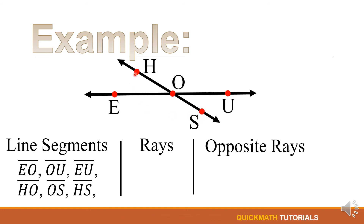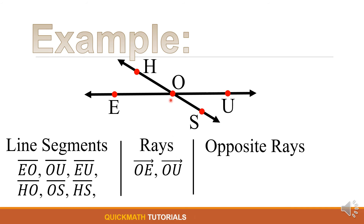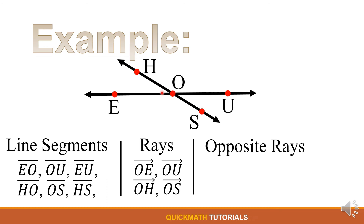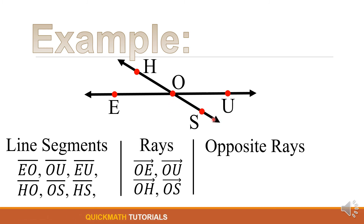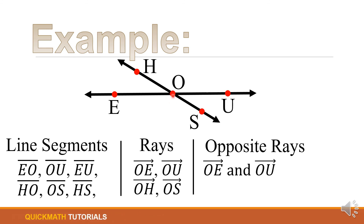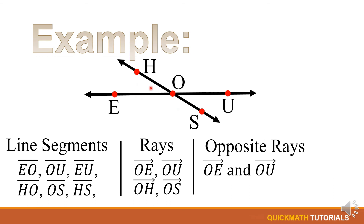We also have line segment OS or SO. Now for the rays, we have ray OE where O is the endpoint, and ray OU where O is also the endpoint. For the other line, we have ray OH where O is the endpoint, and ray OS where O is the endpoint. For the opposite rays: ray OE and ray OU are opposite rays since they share the common endpoint O and extend in opposite directions — toward E and toward U.